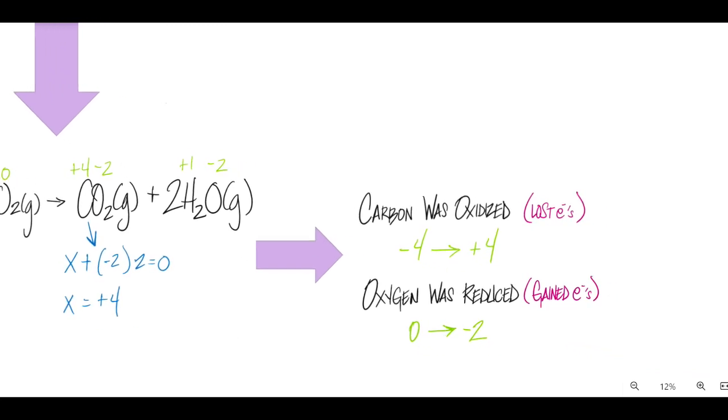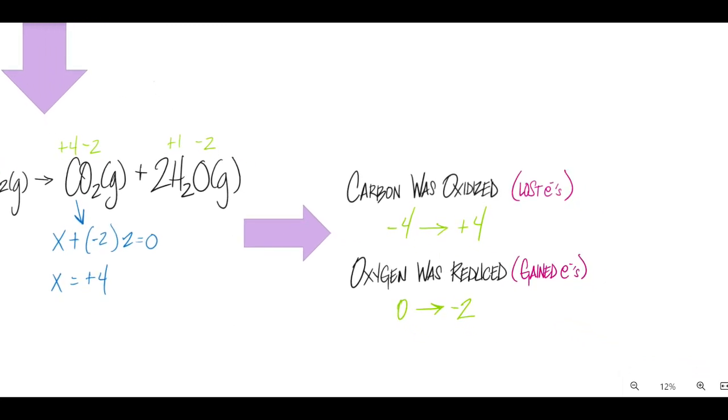So specifically, the carbon was oxidized. Losing electrons is oxidation, as you'll remember. And when you lose electrons, your oxidation state becomes more positive. Now, the oxygen is what was reduced. Remember, gaining electrons is reduction. When you gain electrons, your oxidation number is going to become more negative because electrons have a negative charge. And here we see the oxygen went from zero to negative two. So that's a quick overview of how we use oxidation numbers to determine with confidence whether a reaction is redox or not.